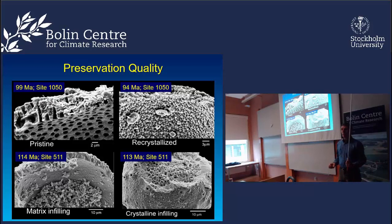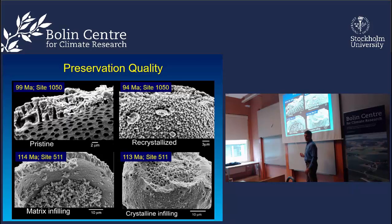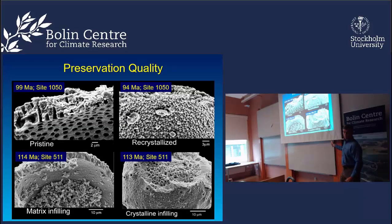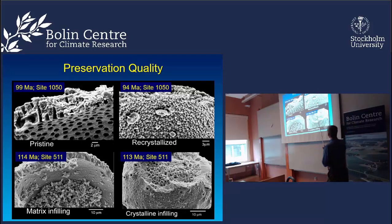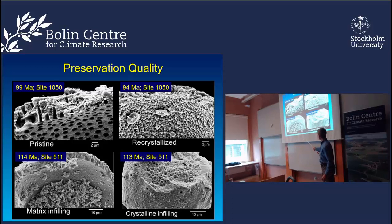As we go back further in time, we have to be concerned about preservation of shells. The ideal preservation shows a pristine shell wall with pores perfectly preserved and nice layering. This particular shell is 99 million years old yet still perfectly preserved because it was deposited in clay-rich sediment. A recrystallized shell has had its chemistry slightly altered by pore water. A shell completely infilled with calcium carbonate cannot be trusted for isotope signals. A dirty shell just needs cleaning to give a fine signal.